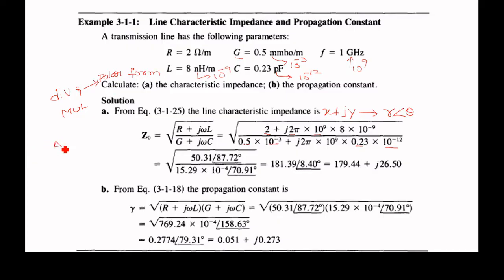Whereas addition and subtraction are easy to do in rectangular form. As here we are having two complex numbers in division, that's why we are converting from rectangular into polar form.